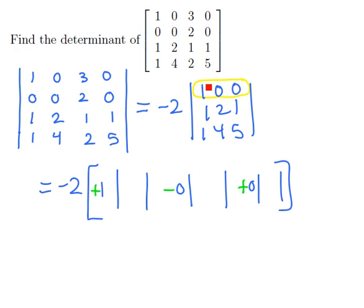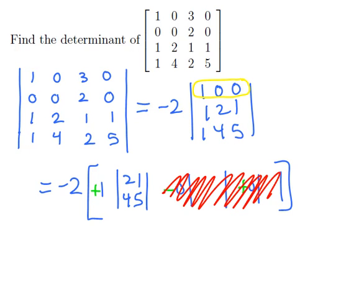And if we cross off the row and column that contains the element 1, we would get the submatrix 2, 1, 4, 5. And the other two submatrices I don't care about, since they both have zeros.